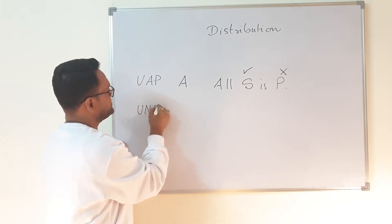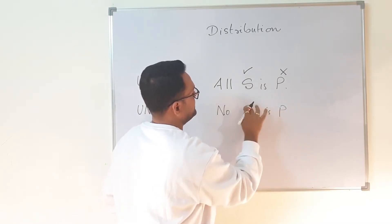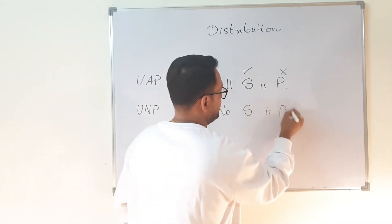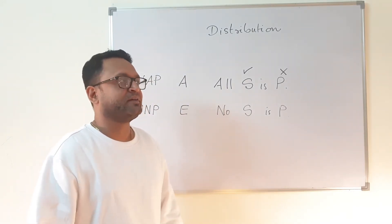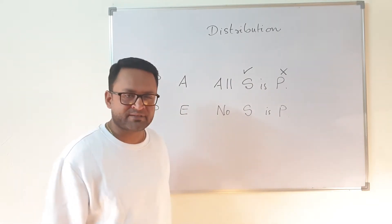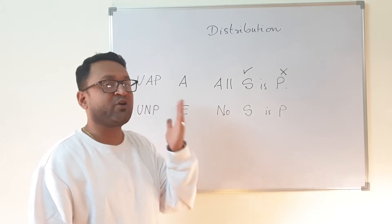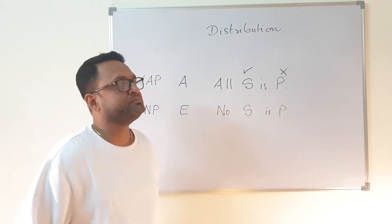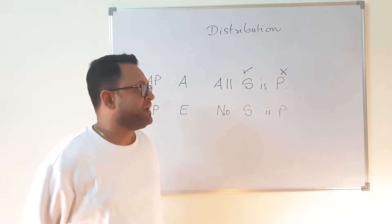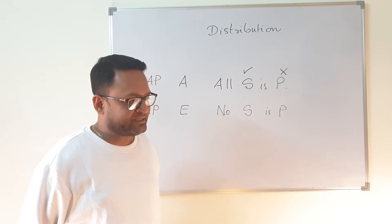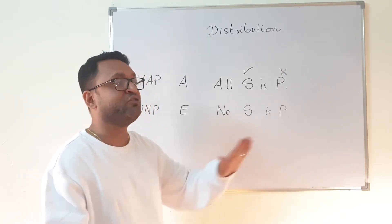Now let us take the universal negative proposition E, expressed as 'No S is P'. When I talk about 'No S is P', some students sometimes give a different answer. When I say 'No S is P', am I talking about all S? Yes, I am talking about all S. And I am also talking about all P's, and we know there is no commonality between them.